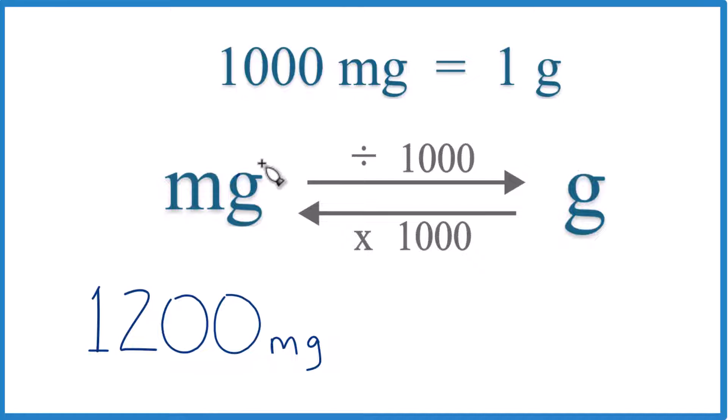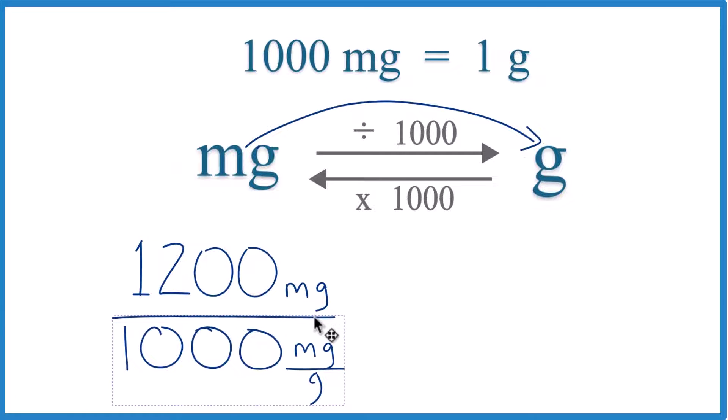Here we have 1,200 milligrams. So we're going from milligrams to grams. We divide by 1,000, like this here. You can see, basically, we just take 1,200 and we divide by 1,000. We get 1.2 grams.